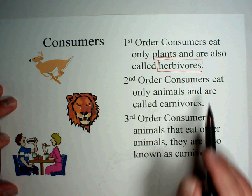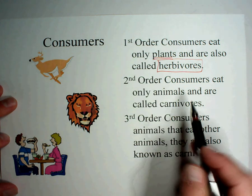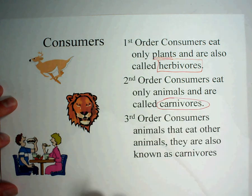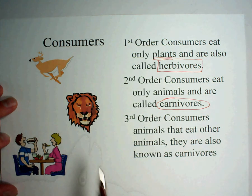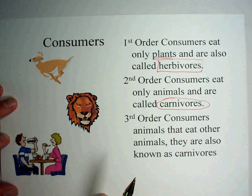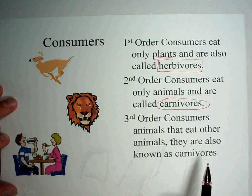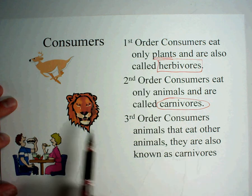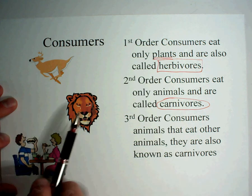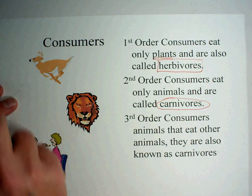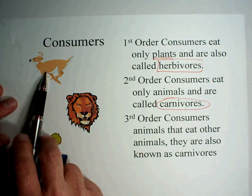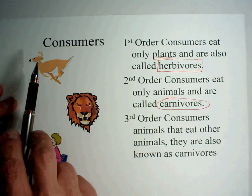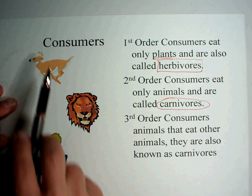Second order consumers eat only animals, and they're called carnivores. A lion, for example, will eat a wildebeest or something else to get his energy. They're meat eaters. The energy is passed along — plants pass their energy to the deer, and the deer's energy is what the lion gets by eating it.